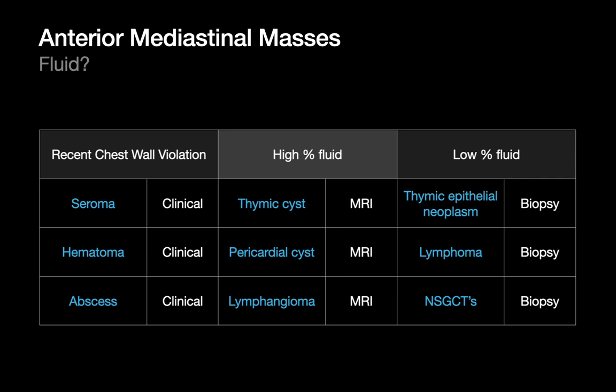If you've got an anterior mediastinal mass that contains fluid with no recent chest wall violation, and that fluid is only a small percentage of the whole mass because the rest is soft tissue, then it's highly likely you're dealing with a thymic epithelial neoplasm, lymphoma, or non-seminomatous germ cell tumor that's undergone cystic degeneration. Once we identify fluid and the setting in which it presents, that observation quickly allows us to pare down the differential diagnosis into something quite short.